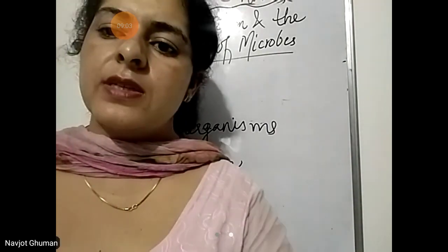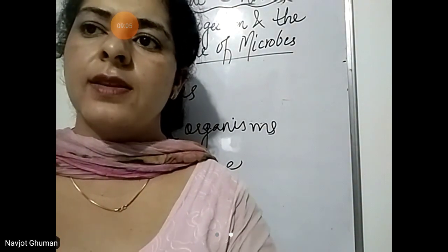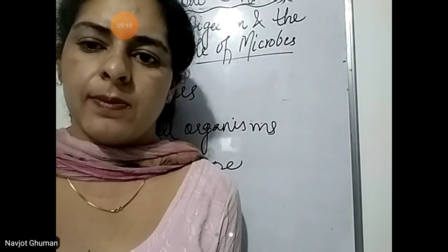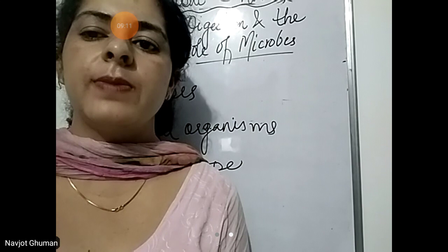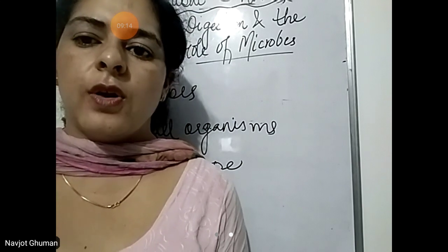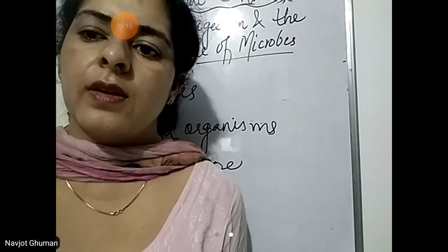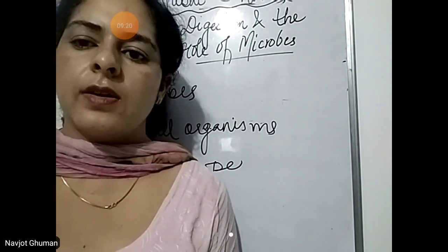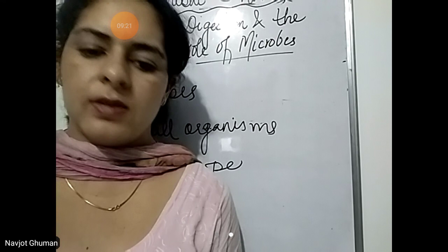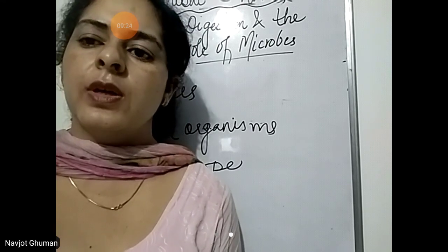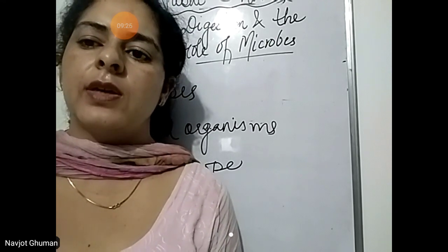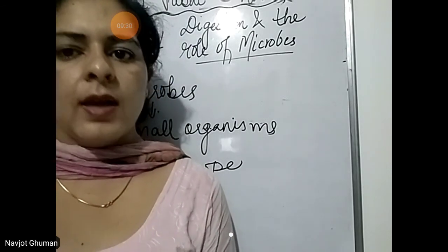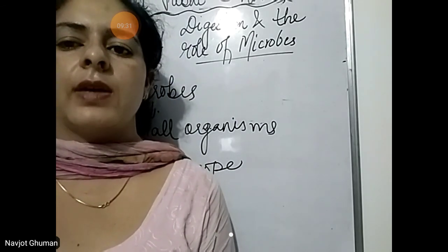Microbes are present all around you. They are on your body, on your hands, on your feet, everywhere. You are sitting on a chair — on the table and chair in front of you, microbes are there. But they are not visible to us because they are very small and can only be seen with the microscope.